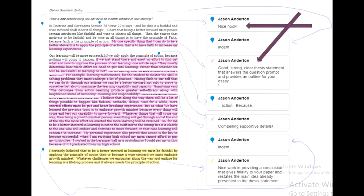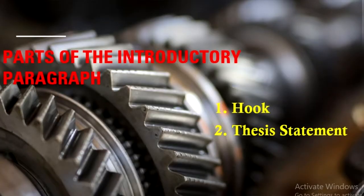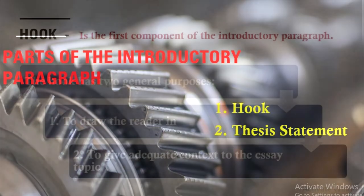Just look at our example — the one with a brown arrow that was given by my teacher in my introductory paragraph. It says there: nice hook given by my teacher. And then the other one is a good, strong, clear thesis statement that answers the prompt question and provides an outline for your essay. Always remember that we have two parts of the introductory paragraph: one is the hook and the other is the thesis statement.